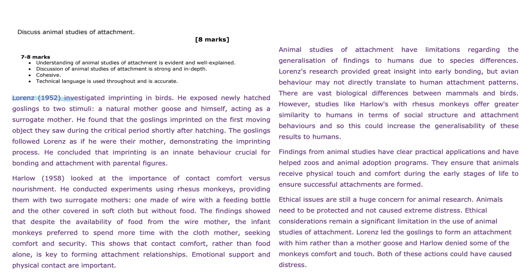Lorenz (1952) investigated imprinting in birds. He exposed newly hatched goslings to two stimuli: a natural mother goose and himself acting as a surrogate mother. He found that the goslings imprinted on the first moving object they saw during the critical period shortly after hatching. The goslings followed Lorenz as if he were their mother, demonstrating the imprinting process. He concluded that imprinting is an innate behaviour crucial for bonding and attachment with parental figures.